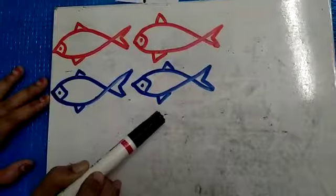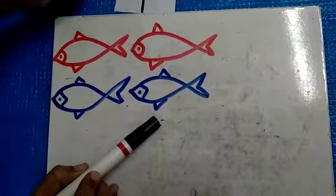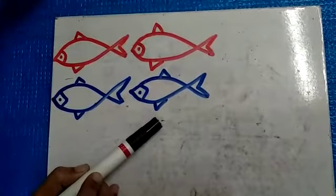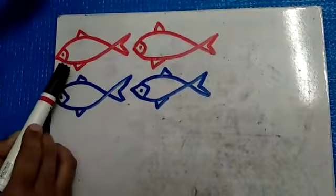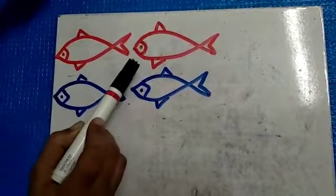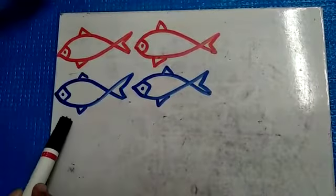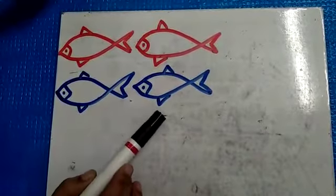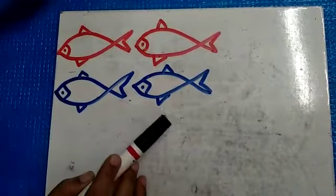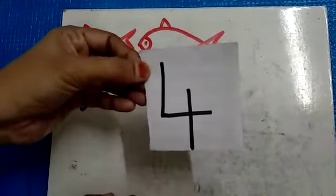How many fishes? 4. Once again we will count. 1, 2, 3 and 4. How many fishes are here? 4 fishes.